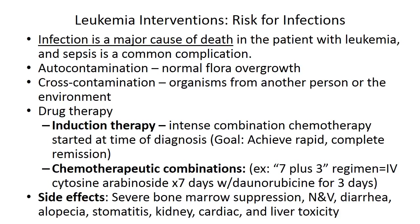The main intervention for leukemia patients is preventing infection, as it is the major cause of death. Infection can occur through autocontamination, where the patient's own normal flora overgrows, or cross-contamination from another person or the environment — for example, a patient with influenza exposing the leukemia patient. Drug therapies used can also contribute to infection risk.